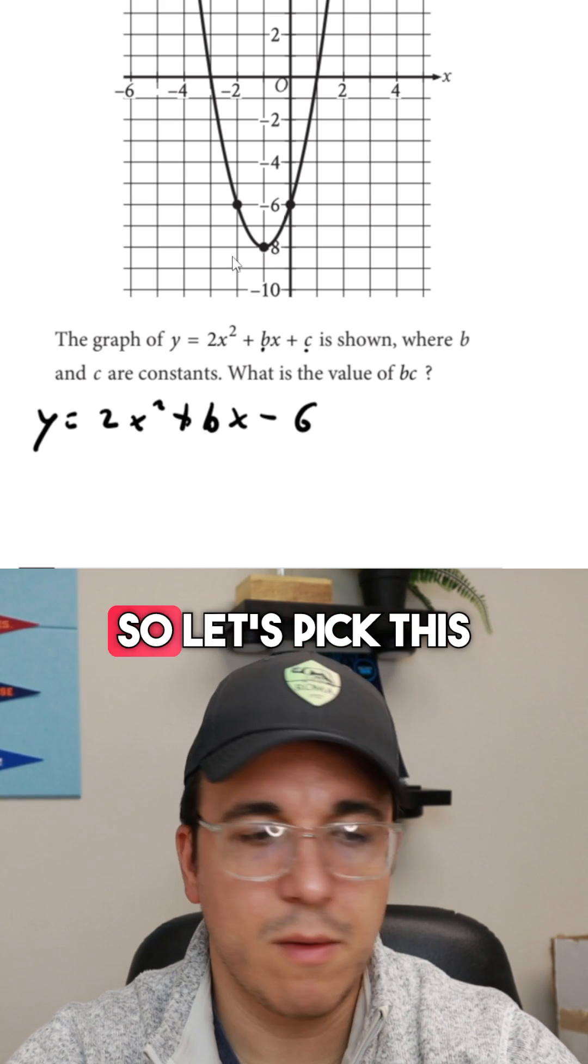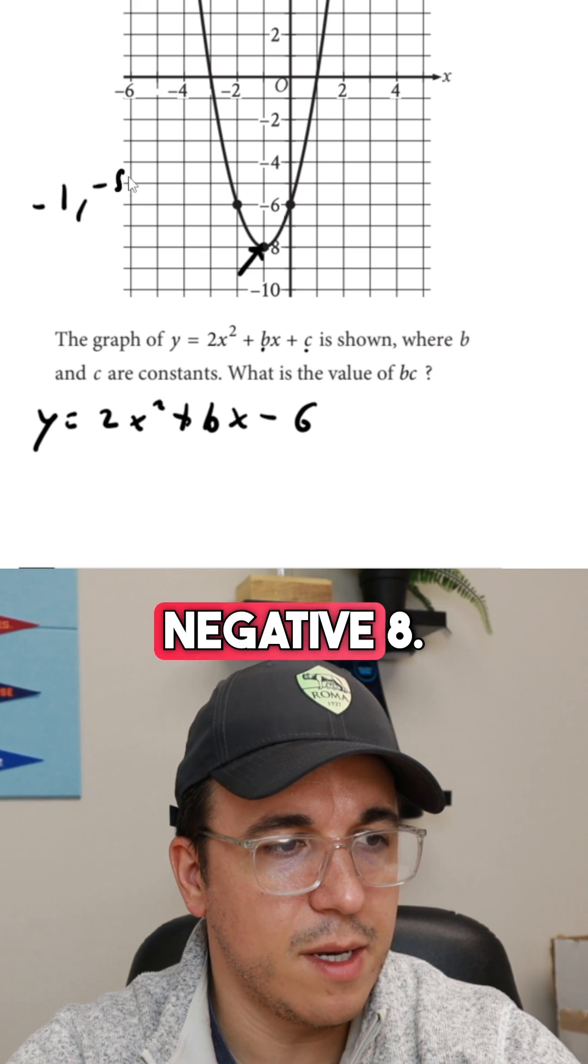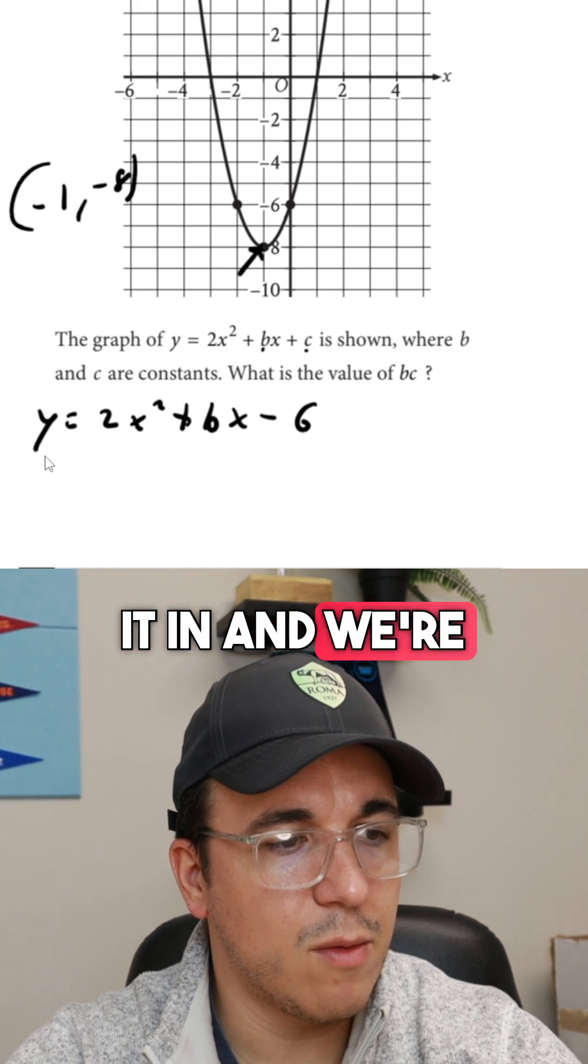Now we just need to plug in one of the other points. So let's pick this point right here, which is negative 1 comma negative 8. We're going to plug that in and we're going to solve for b.